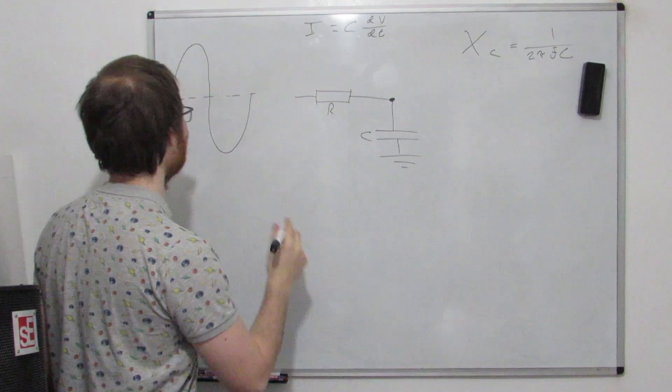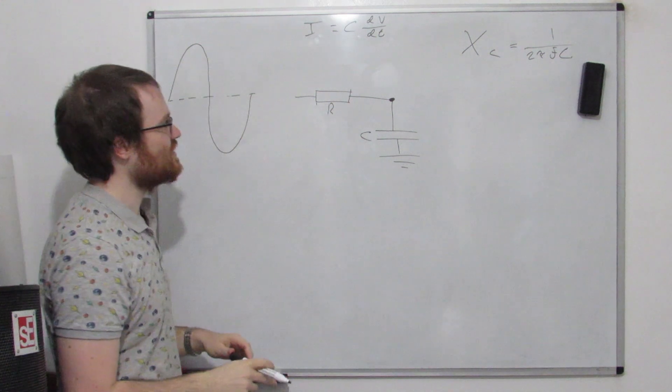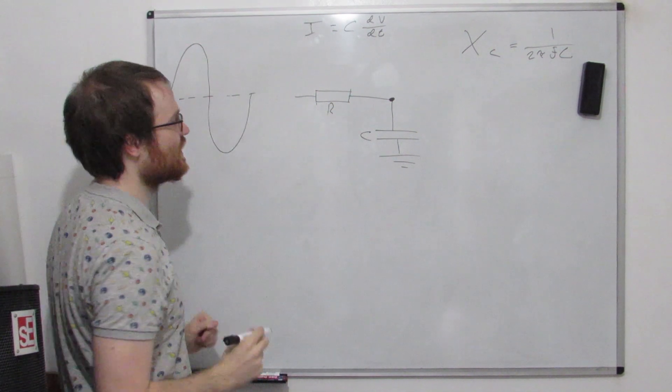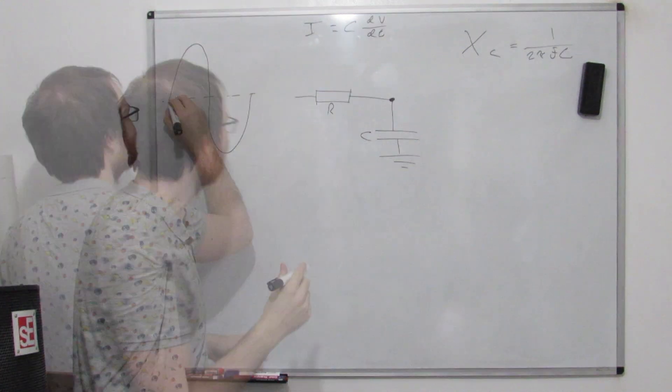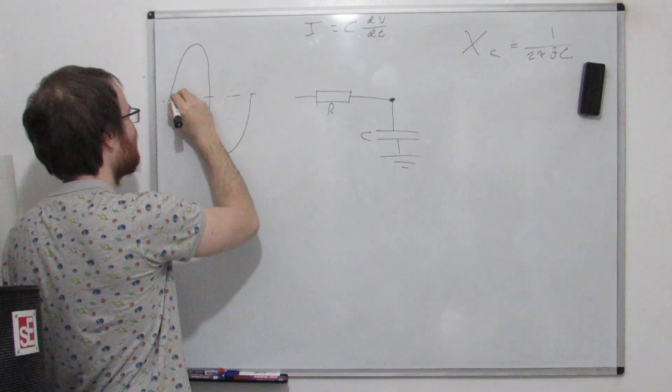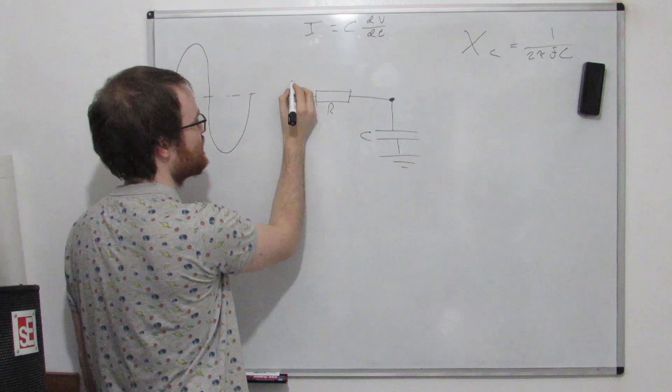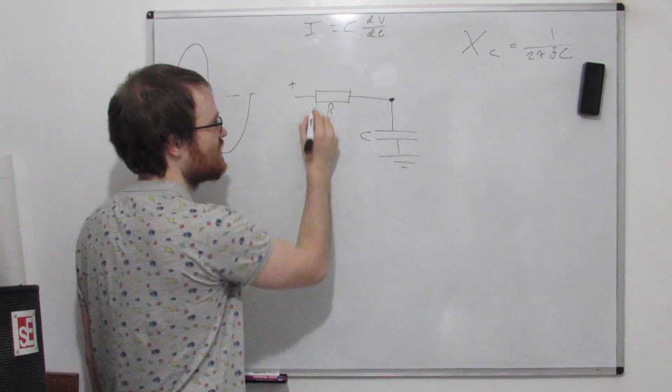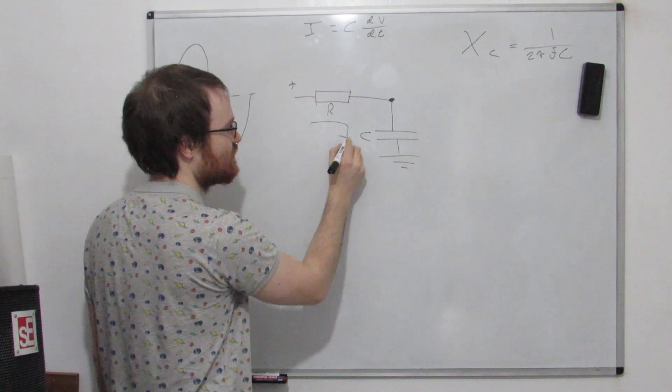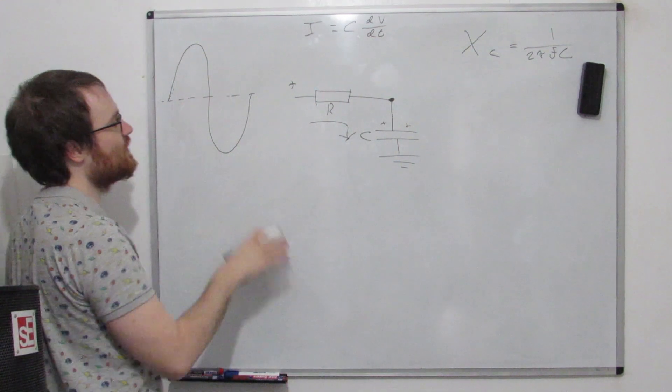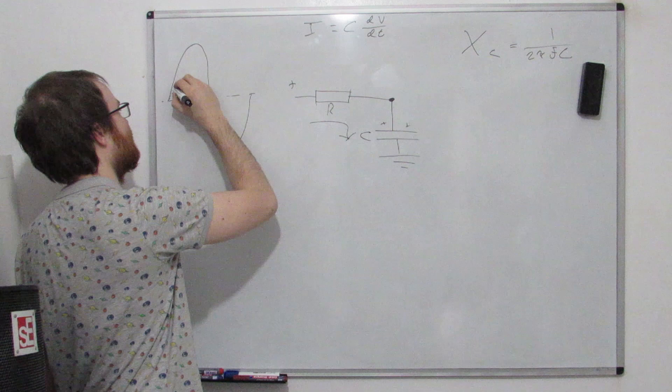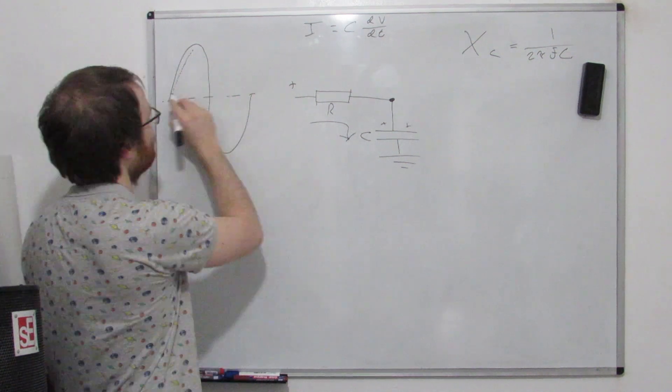Without getting too much into it, what that means is that basically as this is changing, because this is changing nice and slowly, the capacitor has plenty of time to try and catch up. What's essentially going to happen is as we apply an input signal, this is a positive signal, then we know there's going to be current, it's going to flow this way, and that's going to charge this capacitor up. And so because this is nice and slow, the capacitor has plenty of time to charge up. It can't quite keep up.